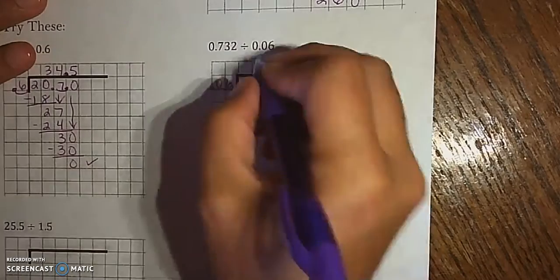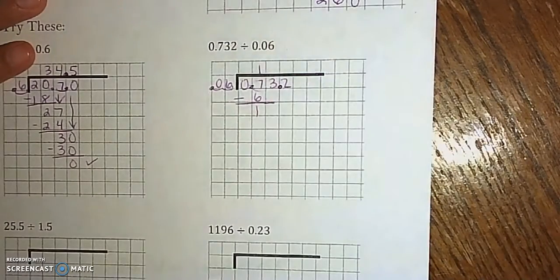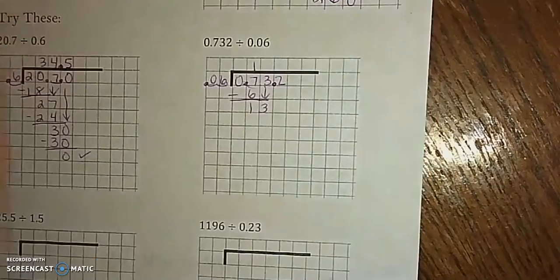6 goes into 7 once. Minus 6 is 1. Bring down the 3. 6 goes into 13.